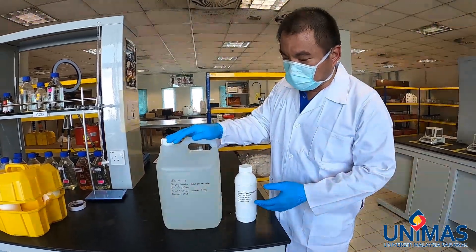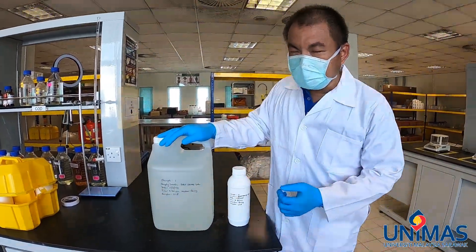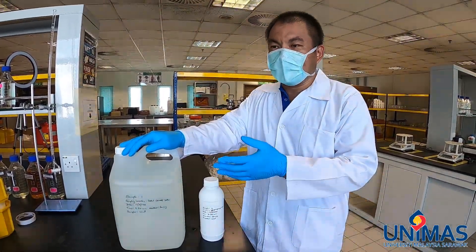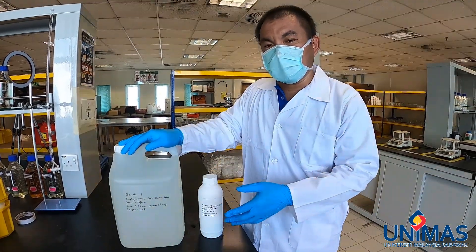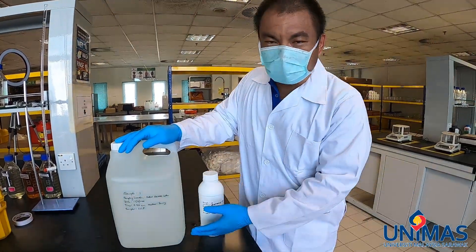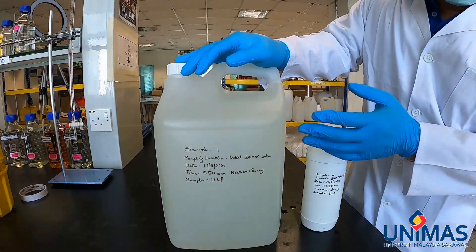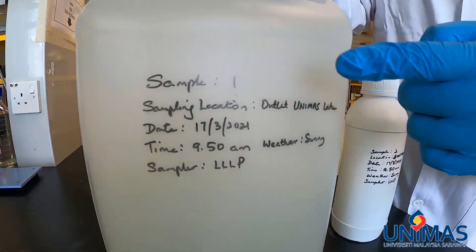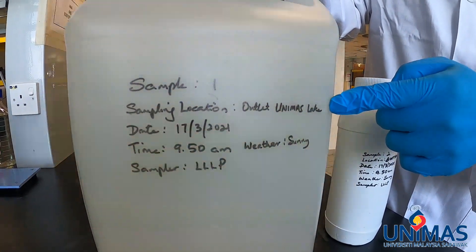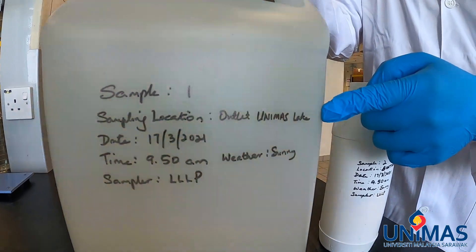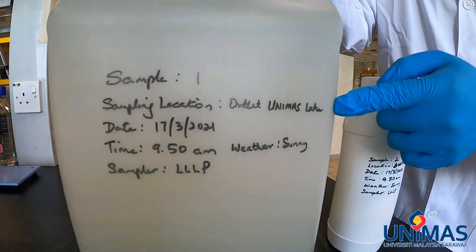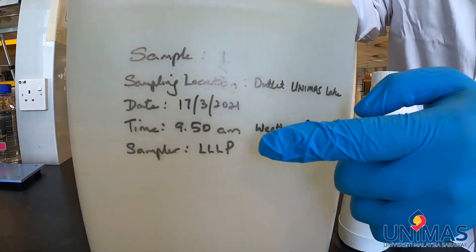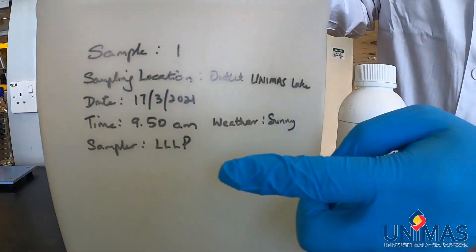When we did the sampling, we also did the labelling of the samples, which is a very important part of sampling, so that by the time you bring it back to the lab — sometimes the testing is done by another person — they have all the information. The important information to provide is the sample number, because sometimes you have more than one sample. You also need to specify the sampling location, and best if you can obtain the coordinates. Then the date, time, weather, and who is the sampler.